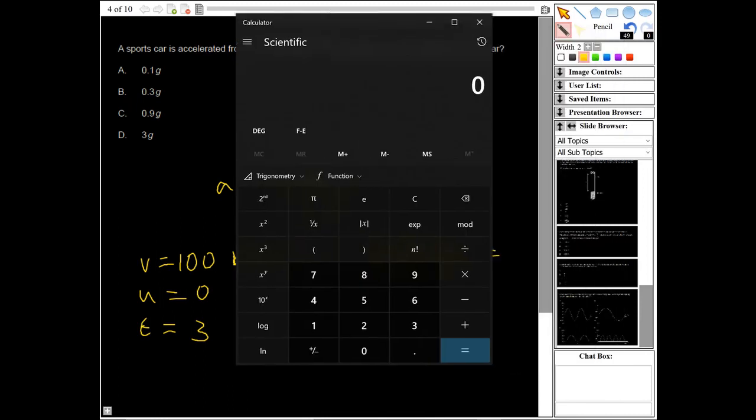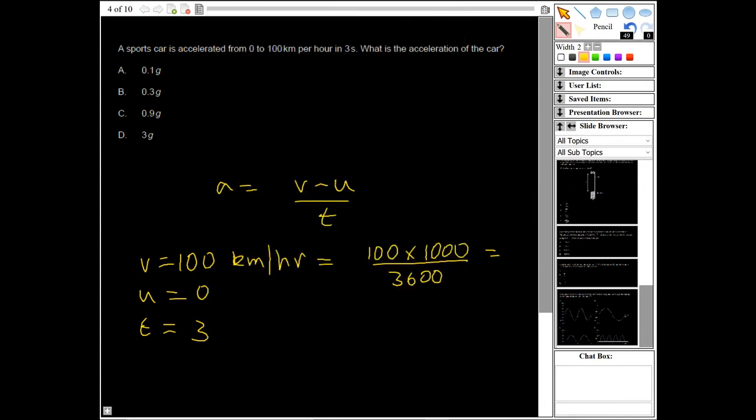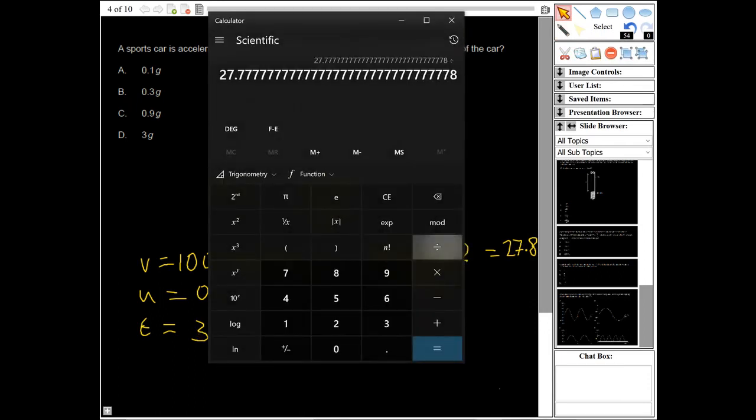So if I just get my calculator out we can do that. So 100 times 1000 divided by 3600 gives me 27.7, 27.8. Okay, so then because our u is 0, our change in velocity will be 27.8, and then we divide that by 3. So a is 9.25 or 9.26.